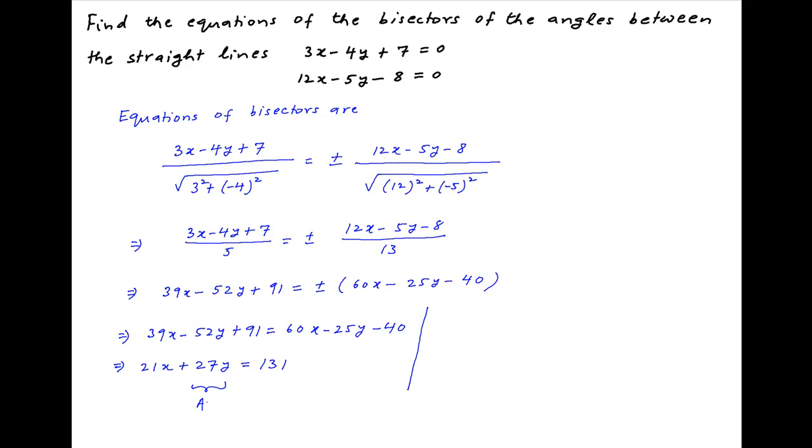Taking the minus sign we get 39x minus 52y plus 91 equals minus 60x plus 25y plus 40, which implies that 99x minus 77y plus 51 equals 0.